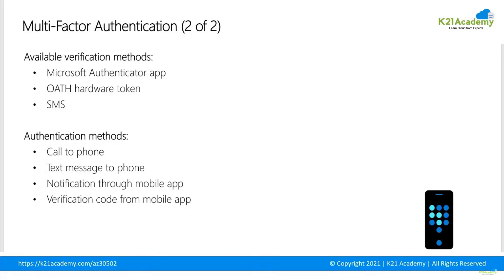Verification code from mobile app: the app generates a new code every 30 seconds — you can see the code whenever you open the authenticator app and enter it in the portal to complete authentication. The best part is it works with no data connection or cellular signal, because it uses an algorithm to generate the number locally without requiring any connectivity.